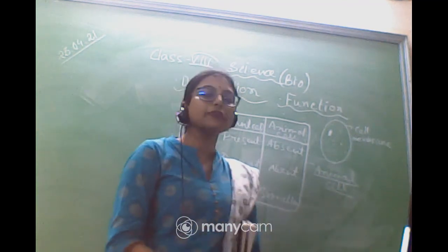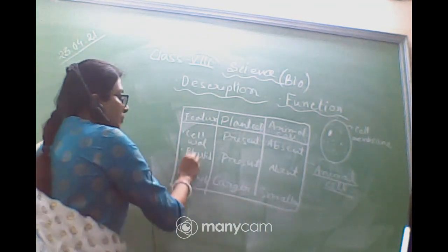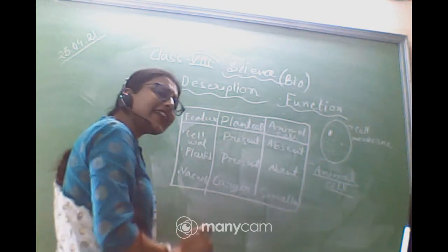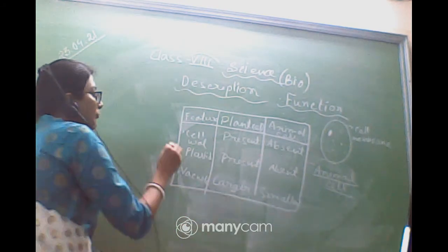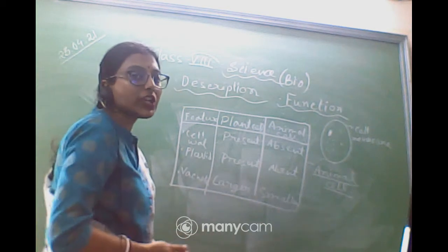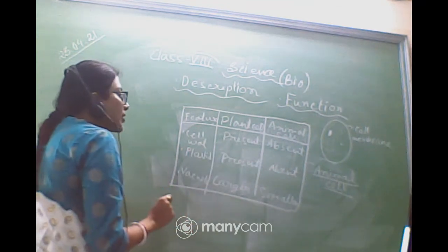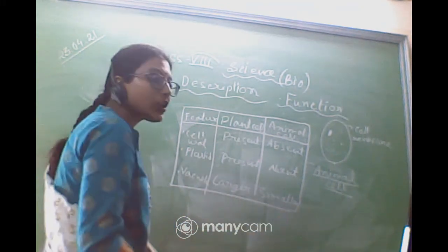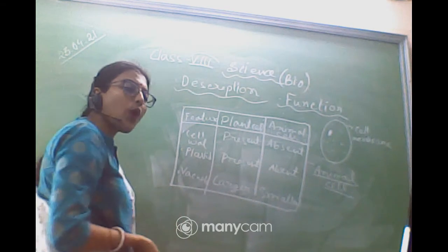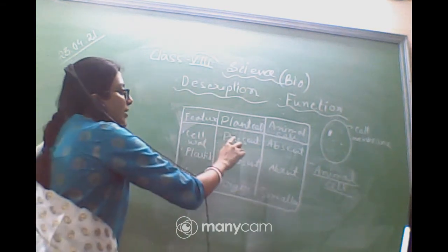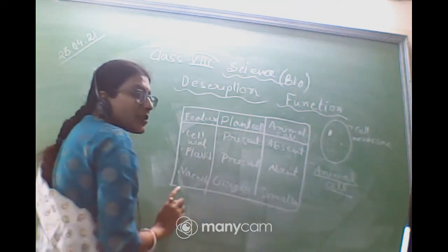For difference-type questions, you have to make three columns. In the first column, write the features upon which you are differentiating. The next two columns are plant cell and animal cell. Feature 1: cell wall — present in plant cell, absent in animal cell. Feature 2: plastids — present in plant cell, absent in animal cell. Feature 3: size of vacuole — larger in plant cell, smaller in animal cell.